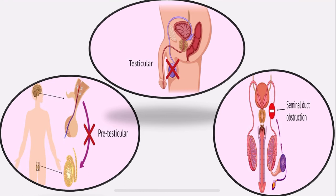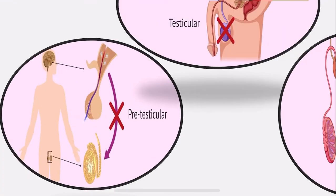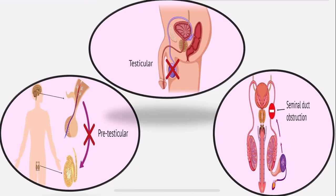There are three classifications of causes: pretesticular, testicular, and post-testicular (seminal duct obstruction). Pretesticular means the infertility issue is outside the testicles and reproductive system. Testicular relates to problems predominantly affecting the testicles themselves. Post-testicular means there is some obstruction in the flow of sperms downstream from the testis.